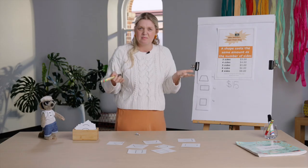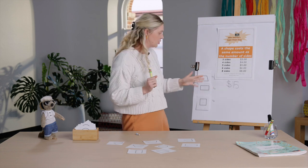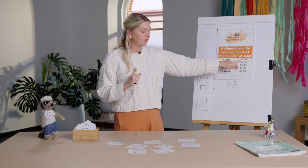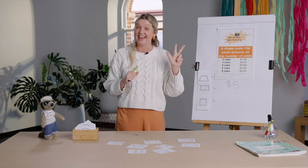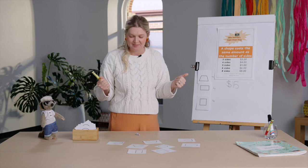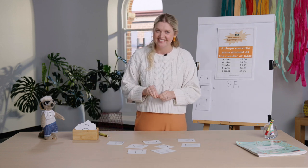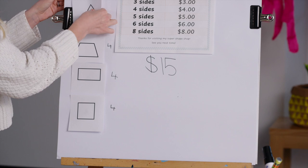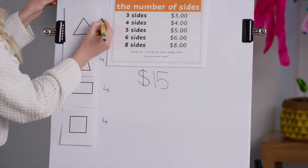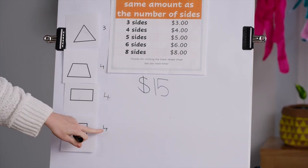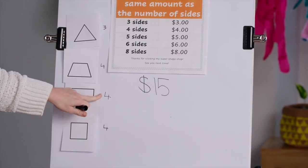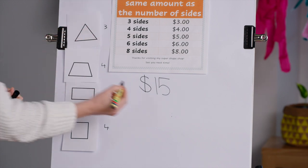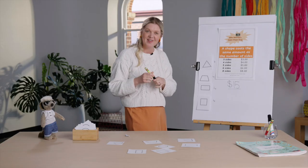How much more money have I got to spend from fifteen? Start at twelve — thirteen, fourteen, fifteen. So for three dollars I'm looking for a shape that has three sides. What could it be? Did you say a triangle? Well done. Four and four is eight, another four is twelve, and three more is fifteen. Well done.